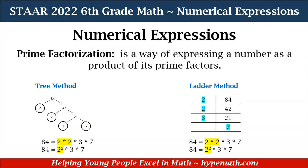Now let's focus on 21. 3 times 7 is 21. So my prime factorization for 84 is 2 times 2 times 3 times 7. Since I have 2 times 2, it can also be written as 2 squared times 3 times 7, which is the same thing.